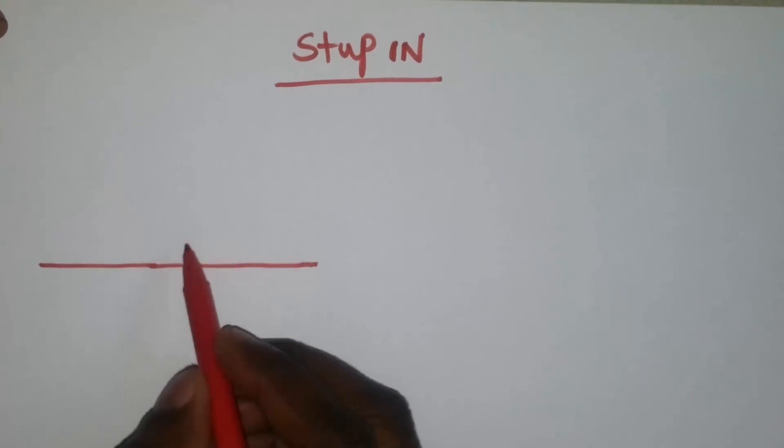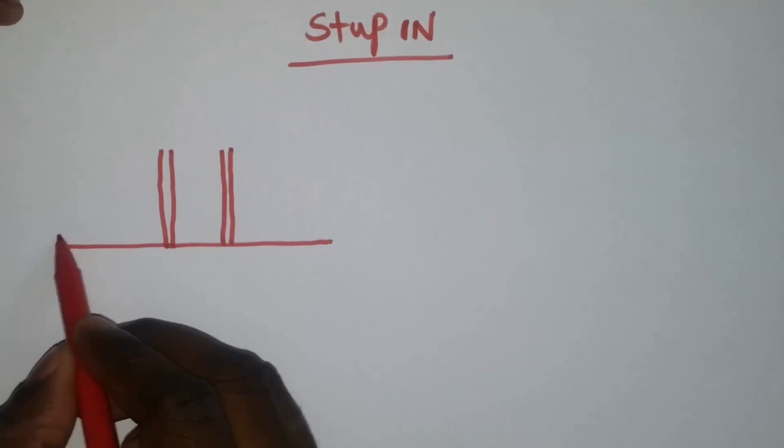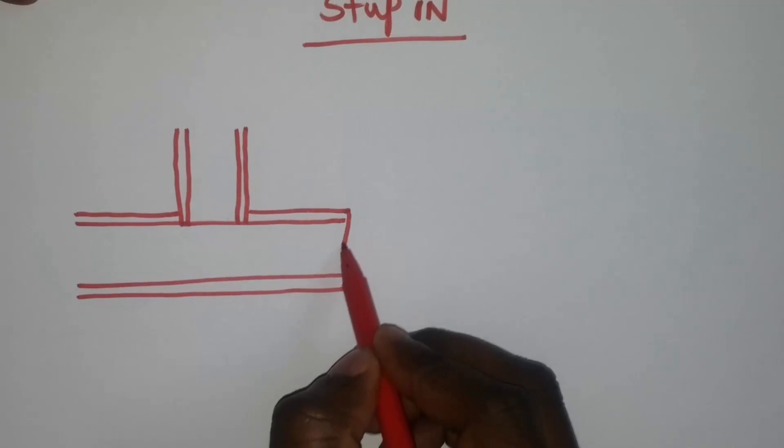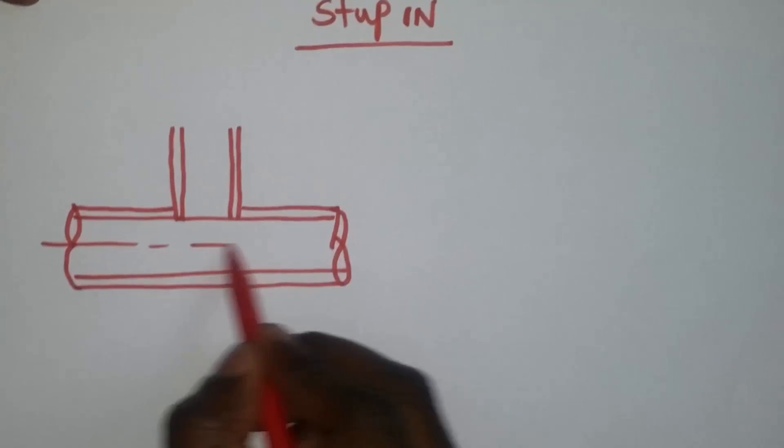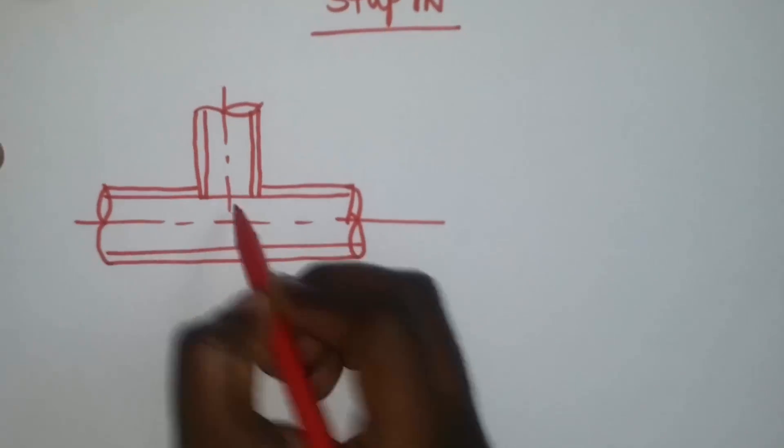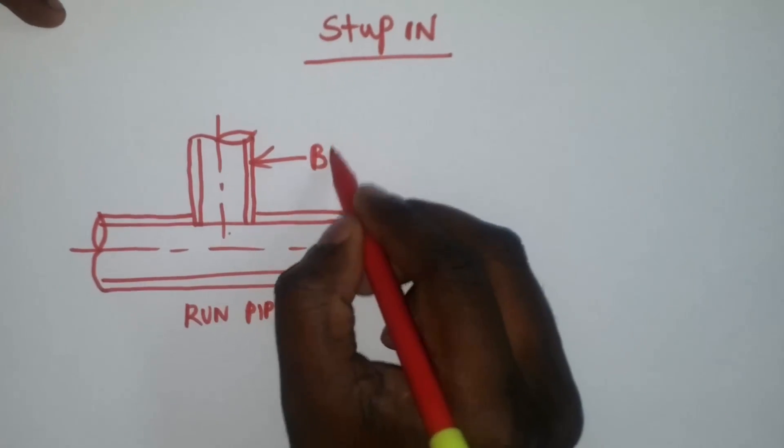Now we will see the stub in branch details. For stub in, the stub or branch pipe extends to the inside of the main pipe. The hole in the main pipe is beveled to allow for a full penetration weld.